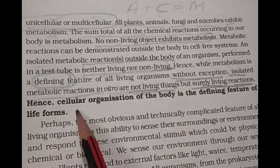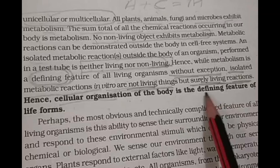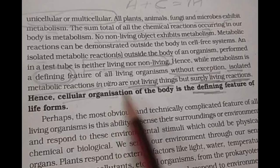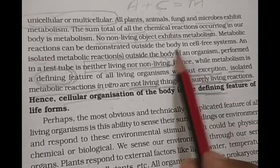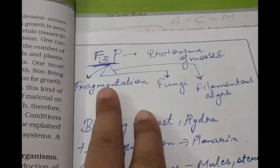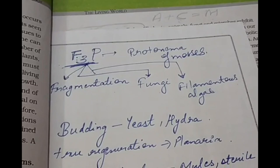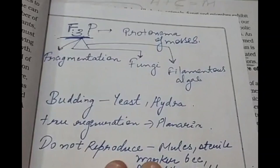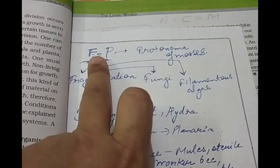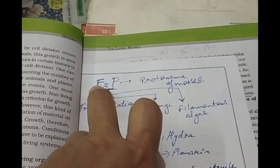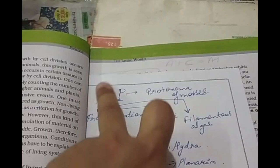Cellular organization of the body is also a defining feature of life forms. So the defining features are metabolism and cellular organization. Growth and reproduction are characteristic features but not defining features. Here is a code to remember — F3P: Fragmentation applies to filamentous algae, fungi, and protonema of mosses.